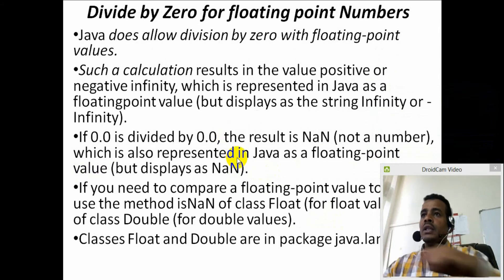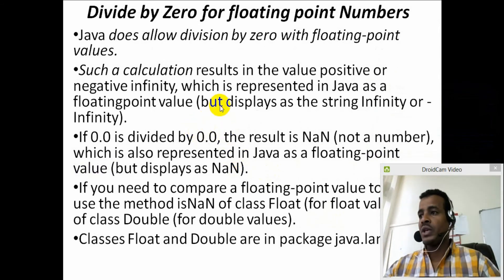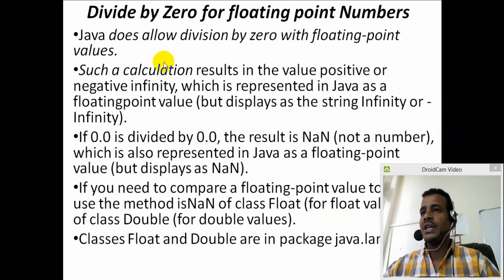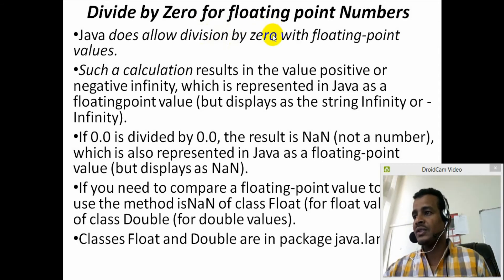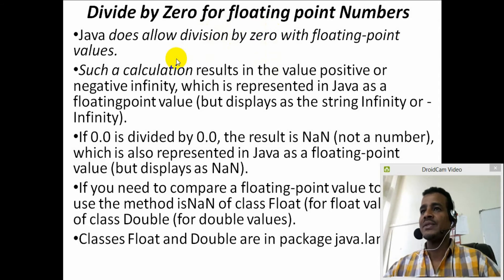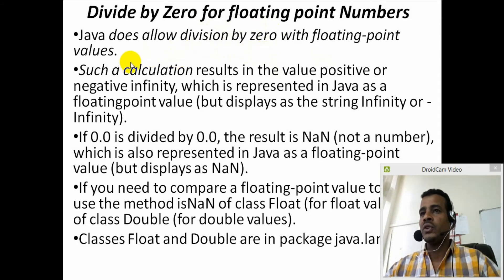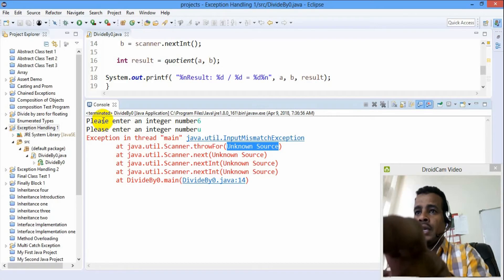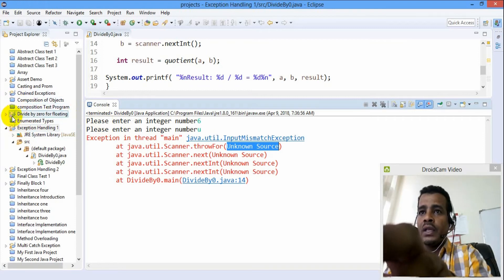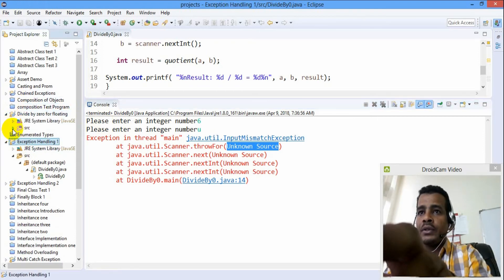In the other class, we have DivideByZero. Java does allow division by zero with floating point values. The program uses divide by floating point numbers.